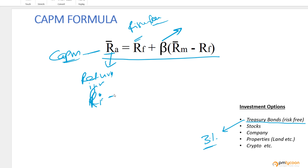Beta is the next component. I've made a complete video explaining beta using real-life charts for Google, Apple, and Microsoft compared with stock market returns. In simple terms: if the overall stock market has moved up by 100 percent in the last five years, how much did your particular stock move? For example, if the stock market went up 100 percent and Apple went up 121 percent, then Apple's beta is 1.2. The beta for the entire stock market is always one.